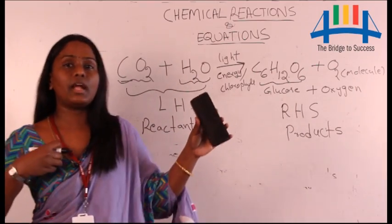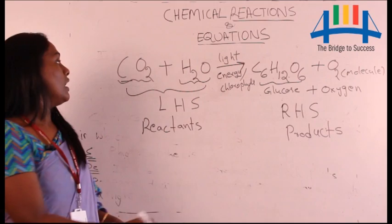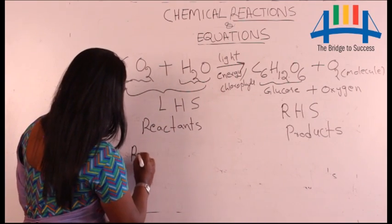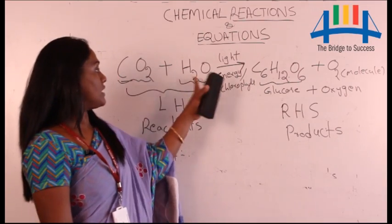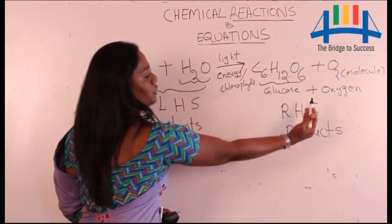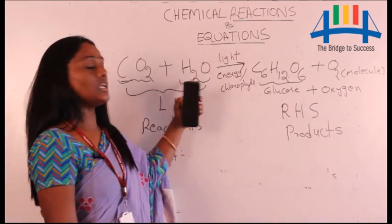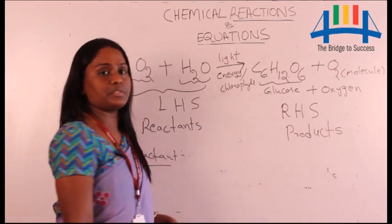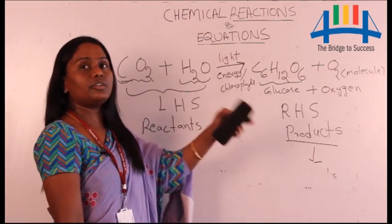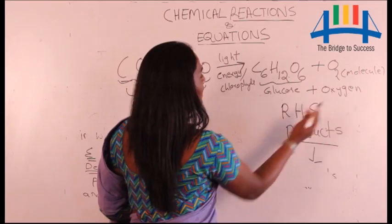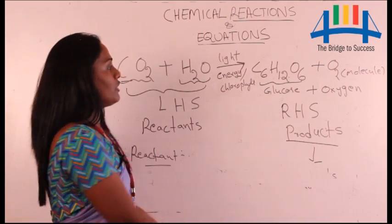What is meant by reactant? Reactant means the substances which react with each other to form a new substance. What is meant by product? The new substances which are formed in a chemical reaction are called products. Here we got two products: glucose and oxygen.